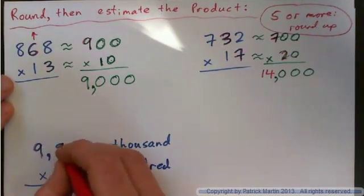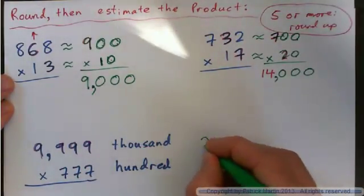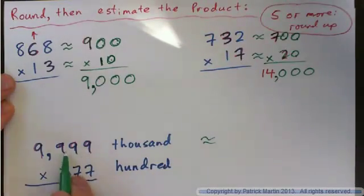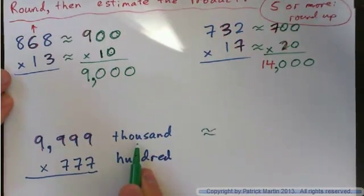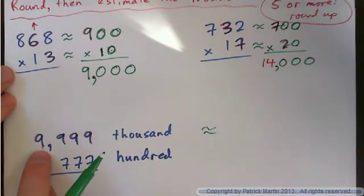So, nine thousand nine hundred ninety-nine. Can you round that to the nearest thousand? Nine thousand nine hundred ninety-nine to the nearest thousand? And remember,